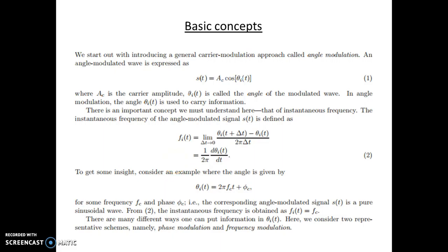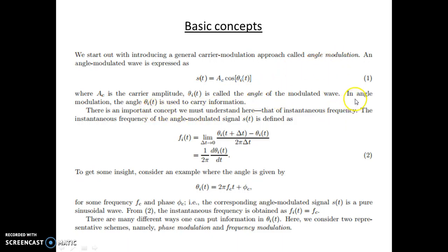In this video we discuss angle modulation. Angle modulation is categorized into two types: phase modulation and frequency modulation. We introduce a general carrier modulation approach called angle modulation. A modulated wave S(t) is denoted as AC cos(θ_i(t)), where AC is the carrier amplitude and θ_i(t) is the angle of the modulated wave. In angle modulation, the angle θ_i(t) is varied according to the information signal.